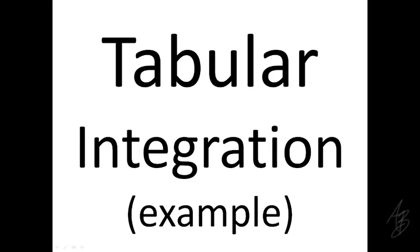We've previously looked at how we can integrate relatively complex integrals using integration by parts. We saw that sometimes we may have to use that process more than once to evaluate a particular integral. Tabular integration is a way to integrate a somewhat complex integral using integration by parts — specifically when we would have to use integration by parts over and over again, more than once or twice.